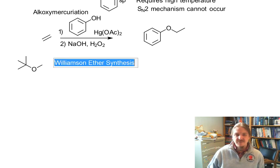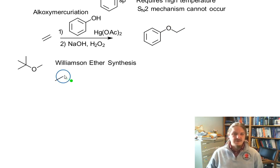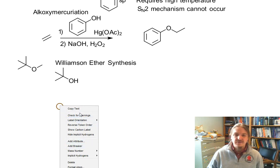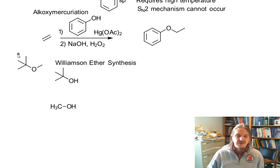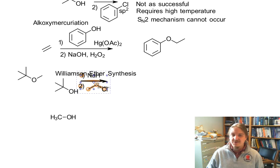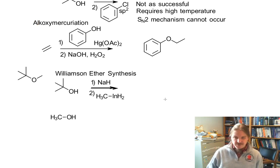You may already suspect — if you've watched the Williamson ether video — that one of the two possible combinations is going to be better than the other. Let's walk through both anyway. One pathway starts with tert-butyl alcohol and the other with methanol. We take one hydrocarbon group, deprotonate the alcohol to make the nucleophile. Using chloromethane — actually, we'd probably use methyl iodide since chloromethane is a gas and methyl iodide is at least a liquid — this makes methyl tert-butyl ether.